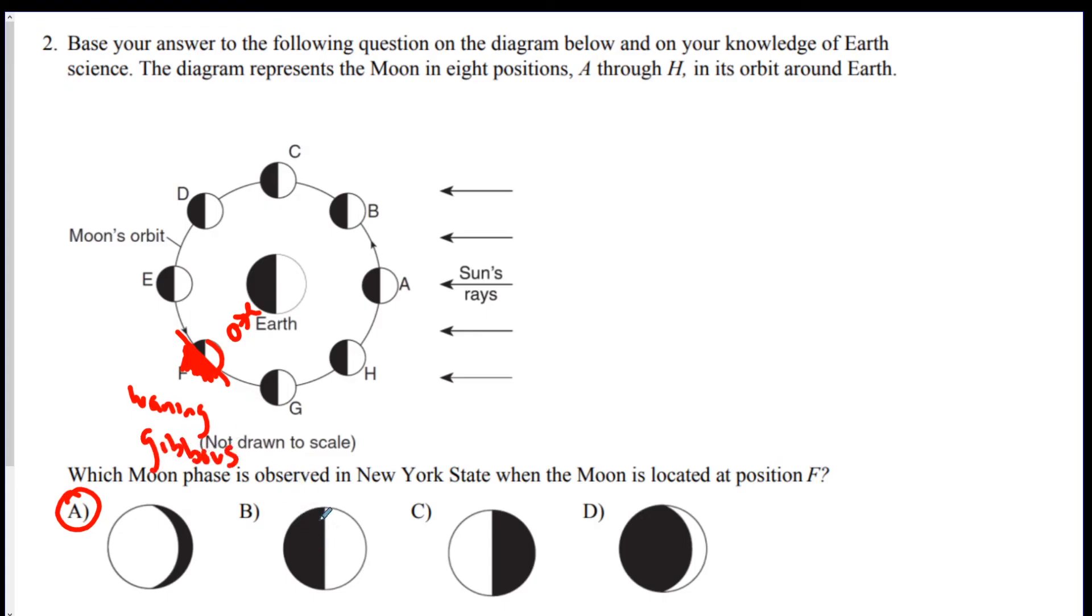So if the answer was B, which one would it be? That would be when you would pause the video and try. So the answer would be location C. This is first quarter. What about C? What letter would C be? Hopefully you said location G. That's third quarter. And where would D be? This would be location B. That is a waxing crescent.